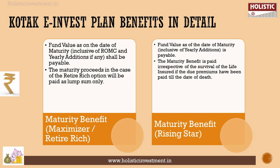If you have the maturity benefit, you will also receive a lump sum amount or an installment option. For the Rising Star plan, the fund value is the same. This is the life insurance survival benefit. Premiums are paid up to the date of death, and you will still receive the maturity benefit.